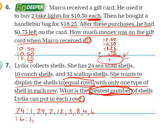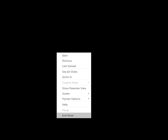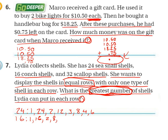Factors of 16: 1 times 16, 2 times 8, 3 won't work, 4 times 4 — since I'm getting back to a number I've already used, I know I'm done. Factors of 32: 1 times 32, 2 times 16, not 3, 4 times 8, 5 won't work, 6 no, 7 no, 8 yes — I've already used it so I know I'm done. What is the biggest one they all have in common? 8.